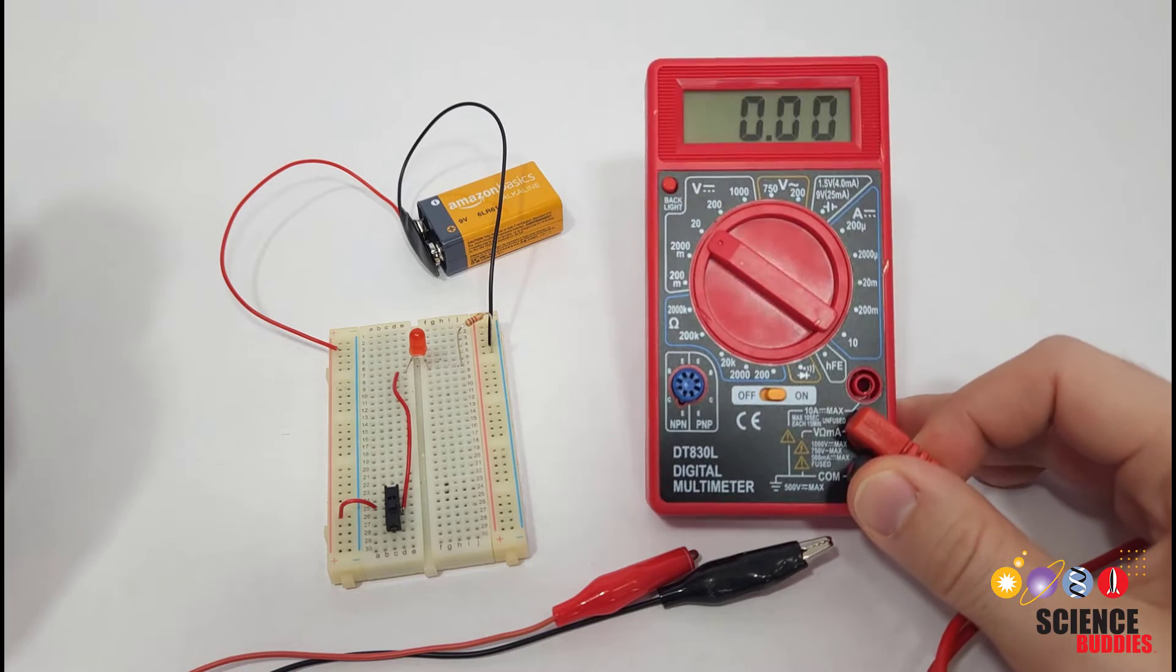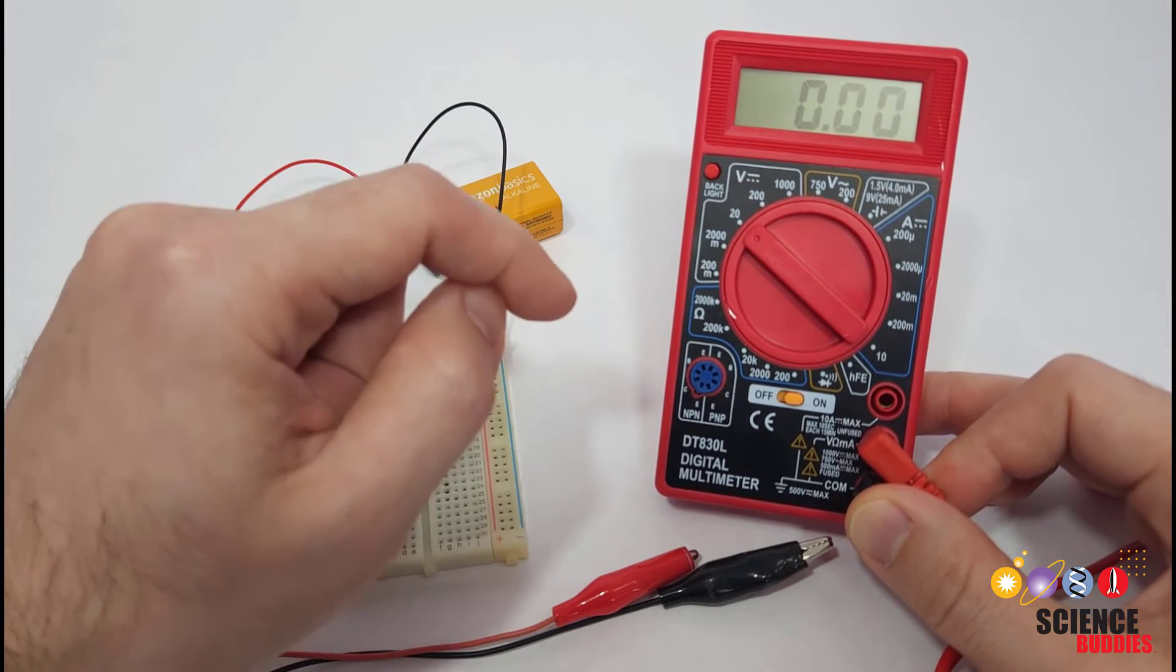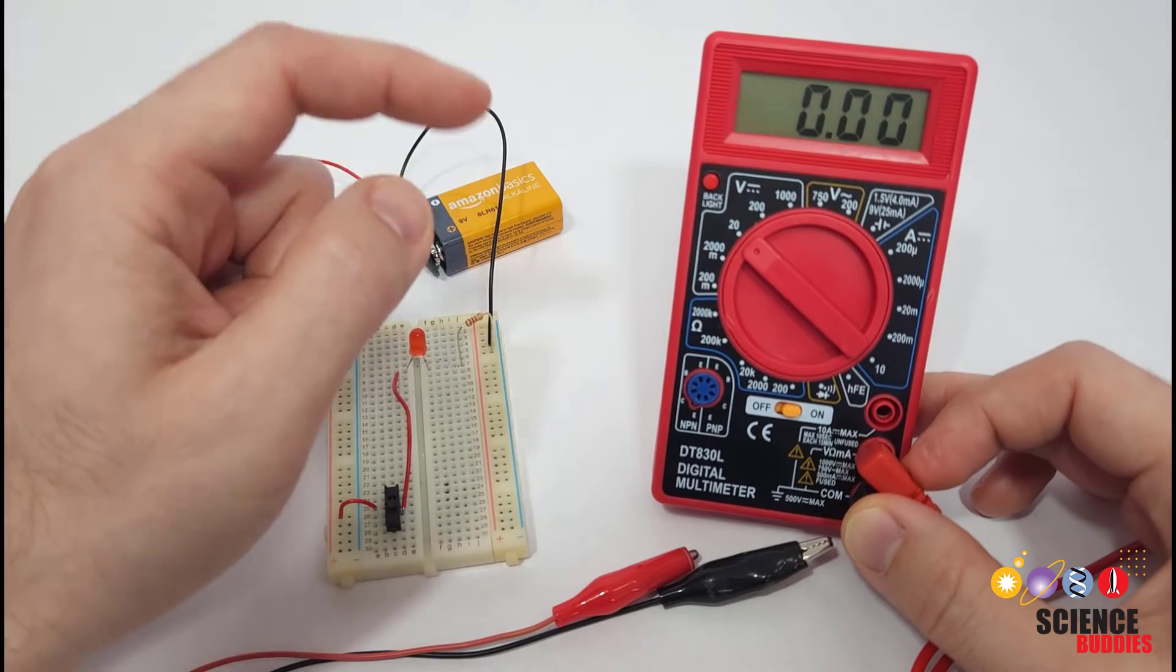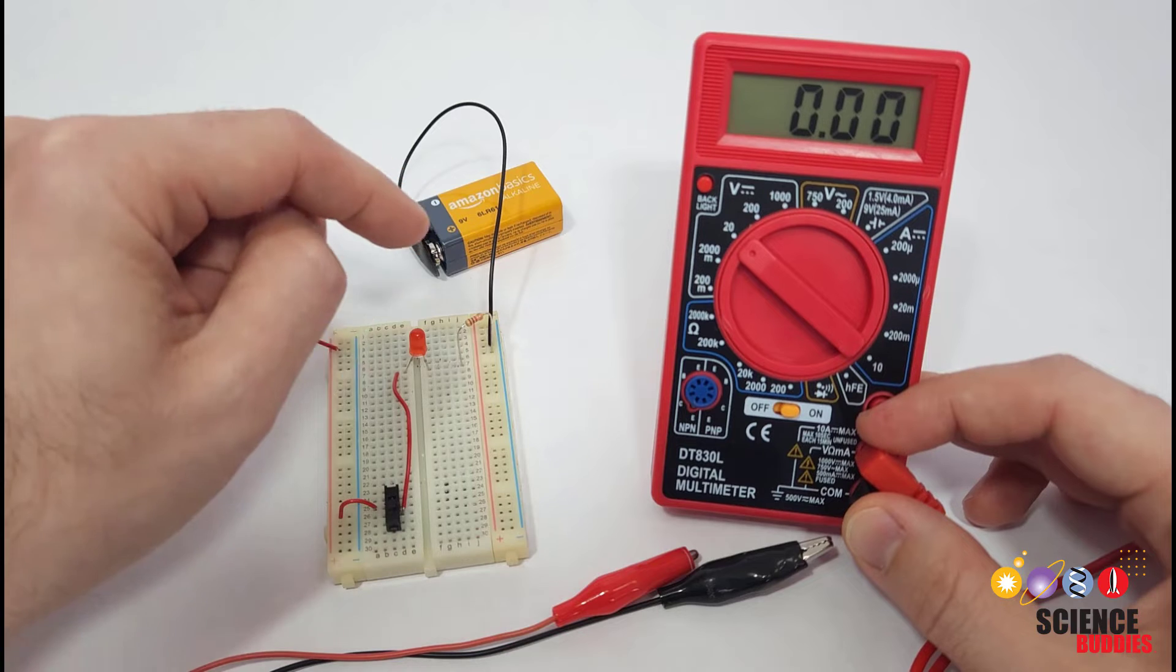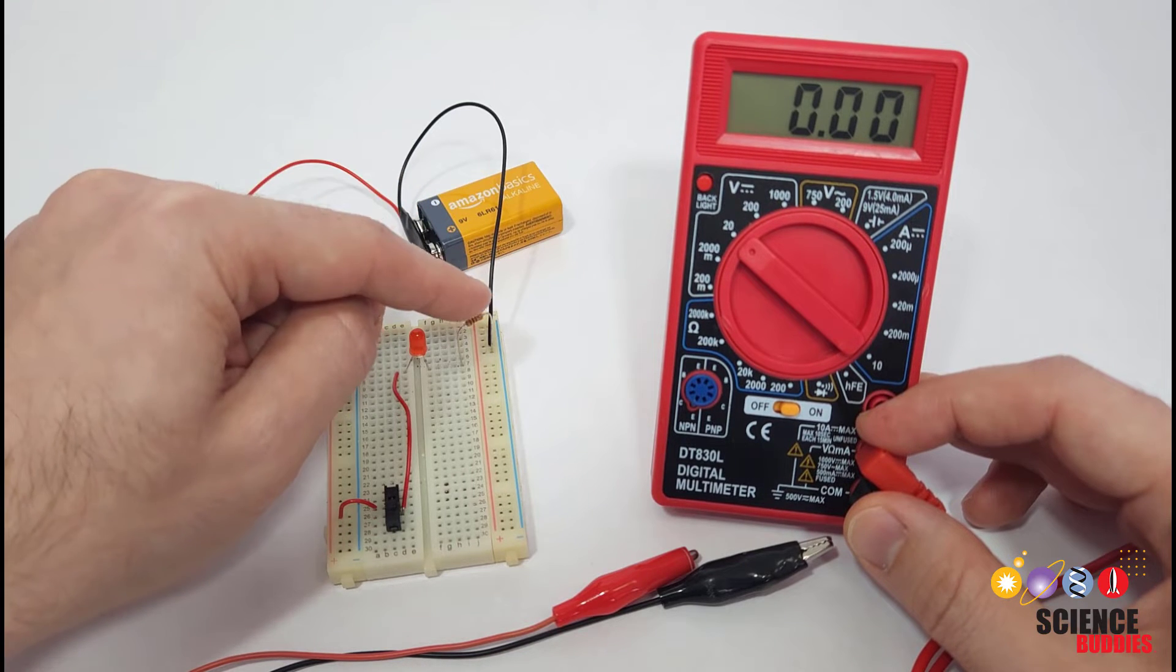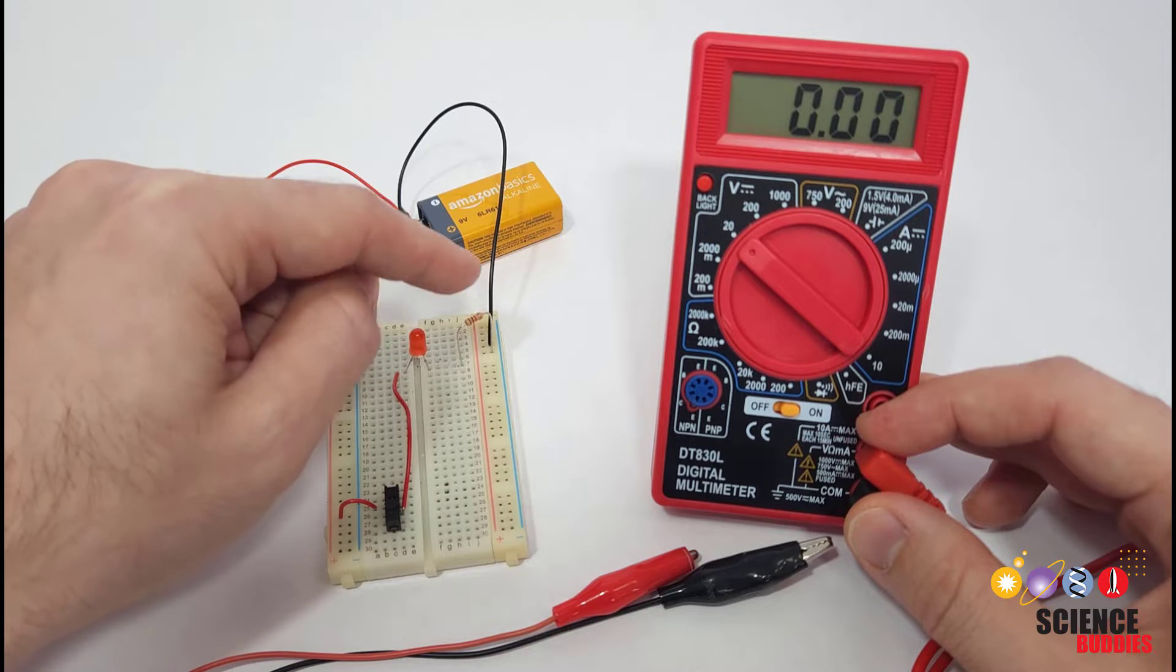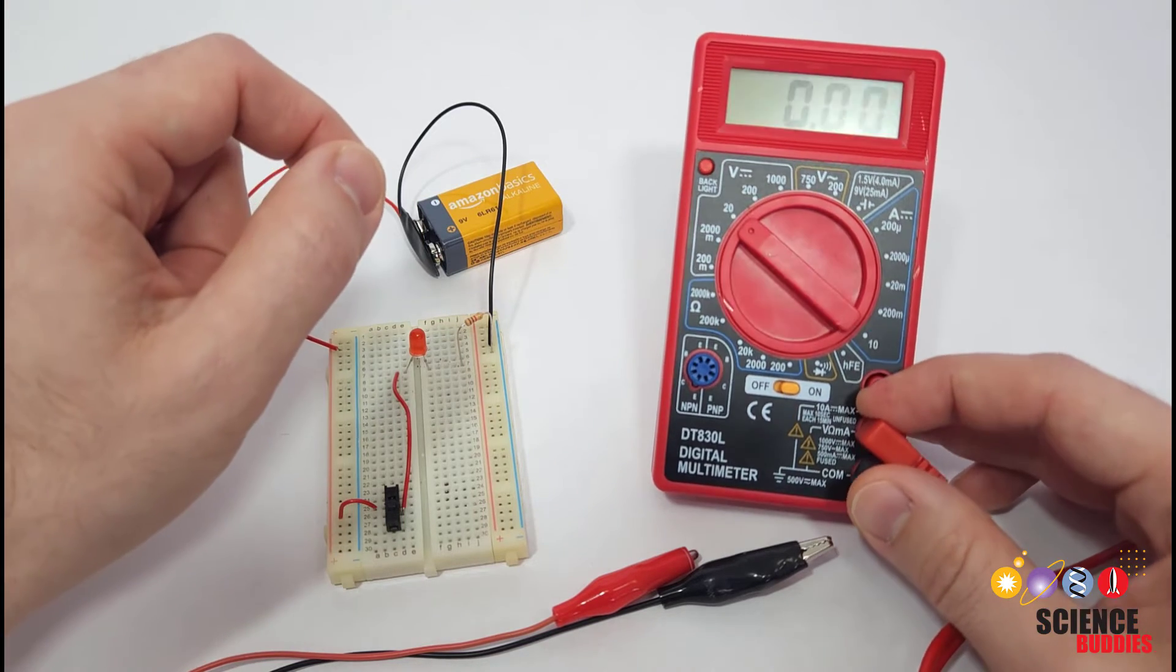To figure out how much current the LEDs can handle before they burn out, we are going to use a multimeter. If you've never used a multimeter before, we have a tutorial video linked in the description of this video. And we are actually going to use a little trick with the multimeter. We aren't going to measure the current directly. We are instead going to measure the voltage drop across the resistor and calculate the current using Ohm's law. I'll explain that in a minute.